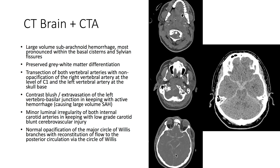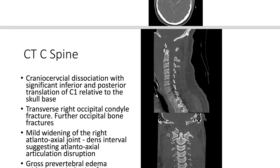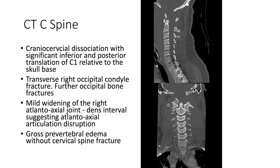There is normal opacification of the major circle of Willis branches with reconstitution of flow to the posterior circulation via the circle of Willis. The CT of the C-spine again shows a cranial cervical dissociation with significant inferior and posterior translation of C1 relative to the skull base. There is also a transverse right occipital condyle fracture, with further occipital bone fractures also evident.